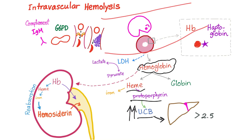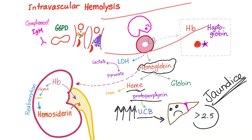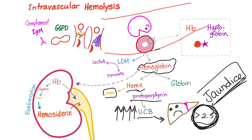Normally, the liver can handle all of the unconjugated bilirubin. But when there is hemolysis, the liver is overwhelmed and cannot process all of it, so levels of unconjugated bilirubin increase. In order to have jaundice — the yellow discoloration of skin, mucous membrane, and sclera — the unconjugated bilirubin level must exceed 2.5. In extravascular hemolysis, destruction occurred in the spleen, which can use the iron and break down globin into amino acids, but the spleen cannot handle the protoporphyrin — that's why we have elevated unconjugated bilirubin.